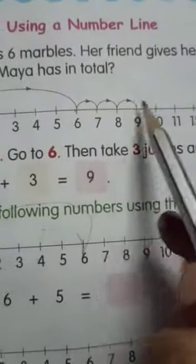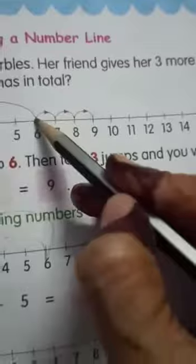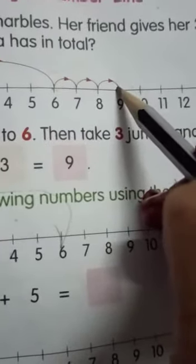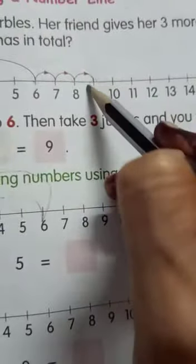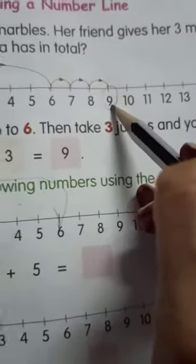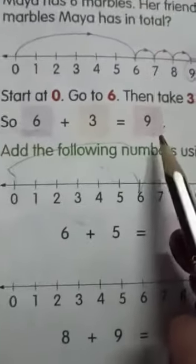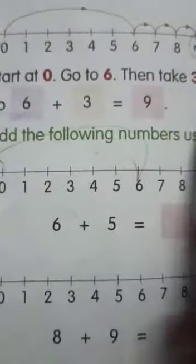So, in addition, you have to take forward moves. So, take 3 forward moves. 1, 2, 3. After taking 3 forward moves, we are reaching at 9. That means, 6 plus 3 is equals to 9.